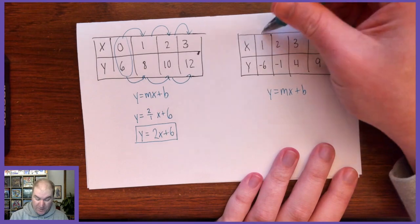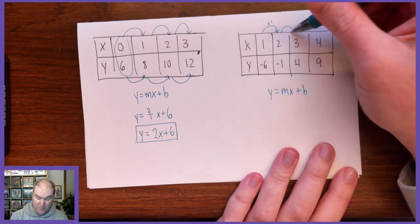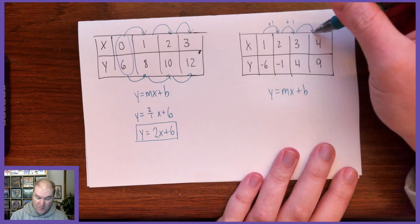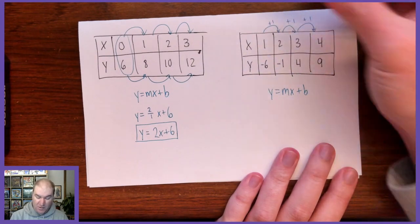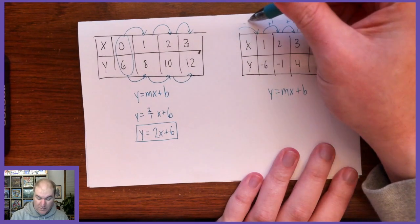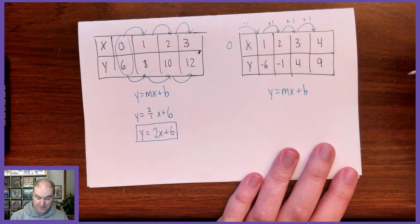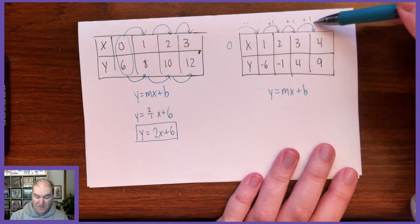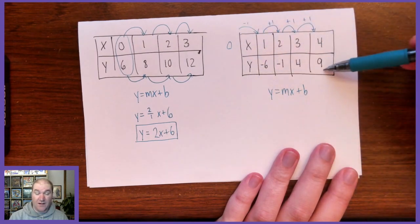Look at the x's. They're going up by 1, plus 1, plus 1, plus 1. So if I want 0, I just need to go backwards 1 and get 0. So whatever the pattern is up here, we also need to find the pattern here.